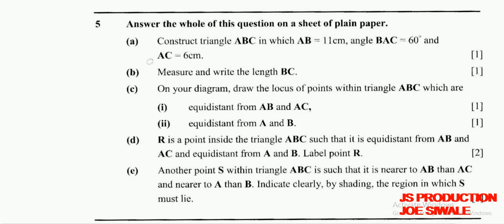Question B reads: measure and write the length BC. One mark. Question C reads: on your diagram, draw the locus of points within triangle ABC which are L1, equidistant from AB and AC. One mark.